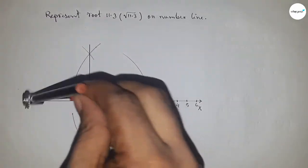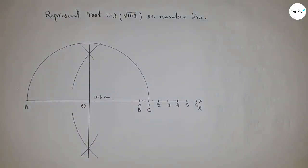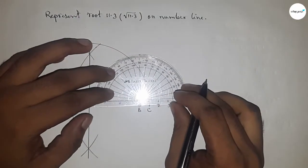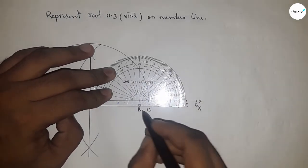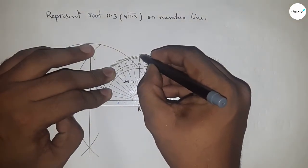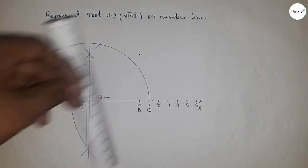So drawing a semicircle through the point A and C. Now having to draw a 90 degree angle on the point B by using protractor.